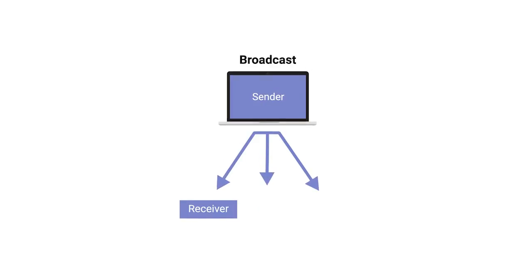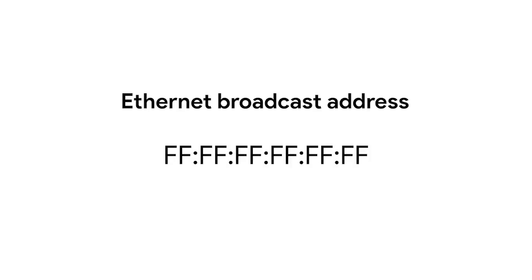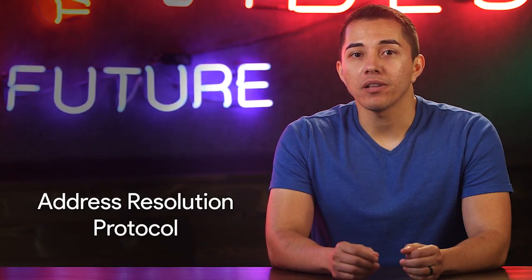The third type of Ethernet transmission is known as broadcast. An Ethernet broadcast is sent to every single device on a LAN. This is accomplished by using a special destination known as a broadcast address. The Ethernet broadcast address is all Fs. Ethernet broadcasts are used so that devices can learn more about each other. You'll be learning more about broadcast and a technology known as address resolution protocol later in this course.